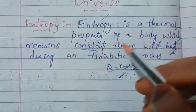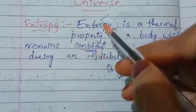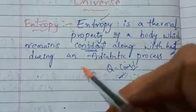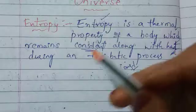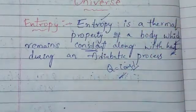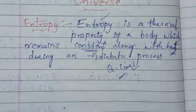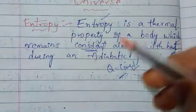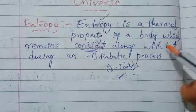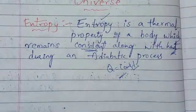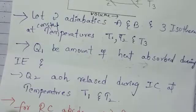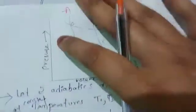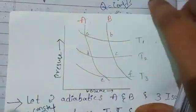Entropy is a thermal property of a body which remains constant, so entropy is constant along with heat during an adiabatic process. In the adiabatic process, the heat supplied to the system is constant. This is the actual proof on the other side of the system, considering the adiabatic process.